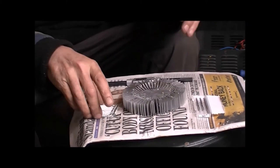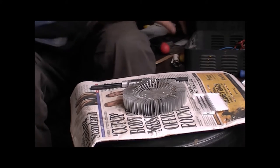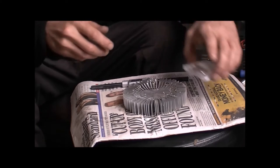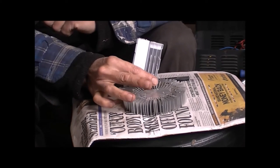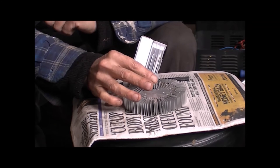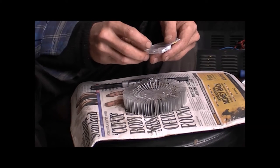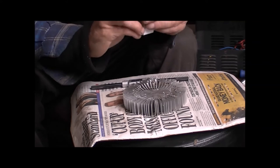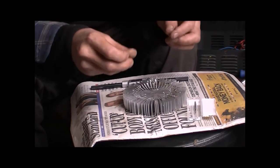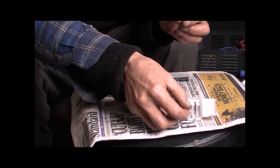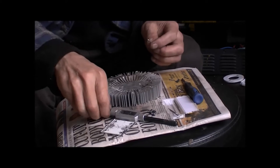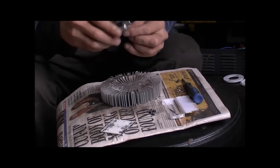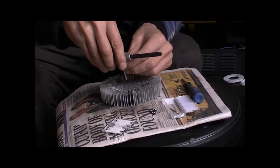The next process is to thread these holes, and for this we'll be using a set of M3 taps. These come in a set: a first taper, a second taper, and something known as a plug. These are essentially graduated cutting tips. The idea of the tapered ones is that they allow you to start the cutting process and self-center in the holes.